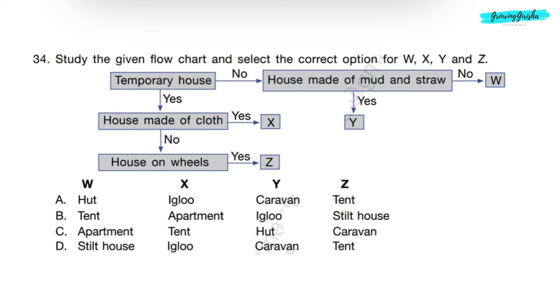Now, we'll find out Z. Temporary house? Yes. House made of cloth? No. House on wheels? Yes. Means Z is caravan. So correct answer is option C.